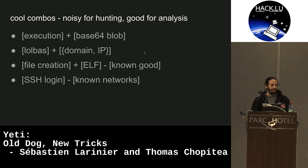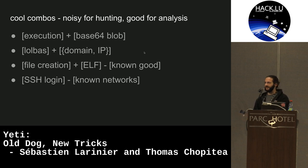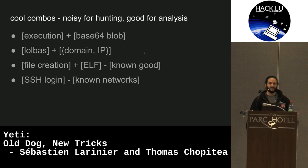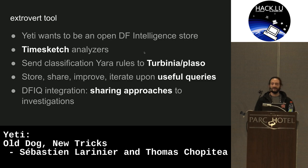This allows cool combos: show me all execution artifacts that also contain a base64 blob — that surfaces bad things. Show me all lolbas executions that have a domain or IP in the line. Show me all ELF file creation events on the timeline, then filter out known good — in 80% of cases you'll find bad stuff. Show me all SSH login events and filter out known-good IPs. These combinations let you slice and dice data. This is really what I want Yeti to become: a store of forensic intelligence helping analysts make sense of their data rather than just raw logs.